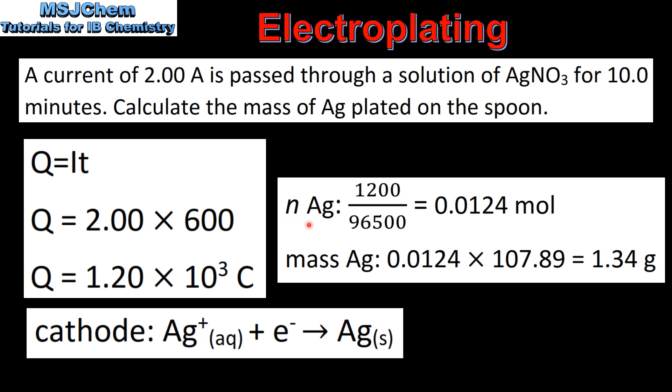Next we will calculate the moles of silver plated. So we divide our value for Q by the charge on 1 mole of electrons, which is 96,500 coulombs. This gives us 0.0124 moles of silver.